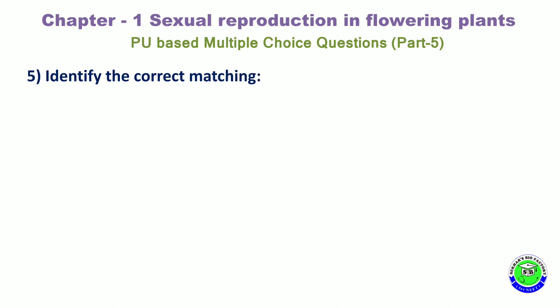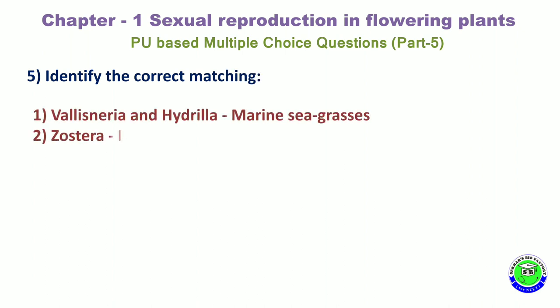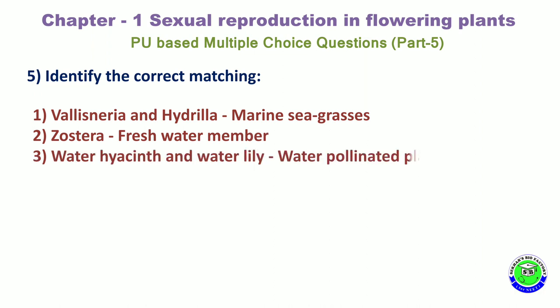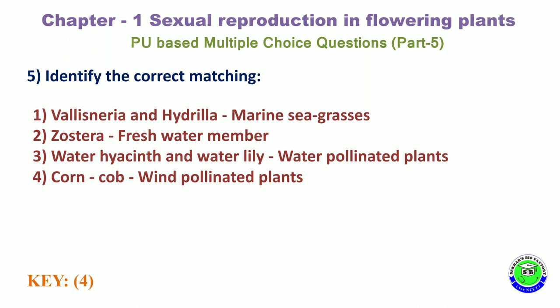Question 5. Identify the correct matching. Option 1: Vallisneria, Hydrilla — marine sea grasses. Option 2: Zostera — fresh water member. Option 3: Water hyacinth and water lily — water pollinated plants. Option 4: Corncob — wind pollinated plant. The correct matching is the 4th option.